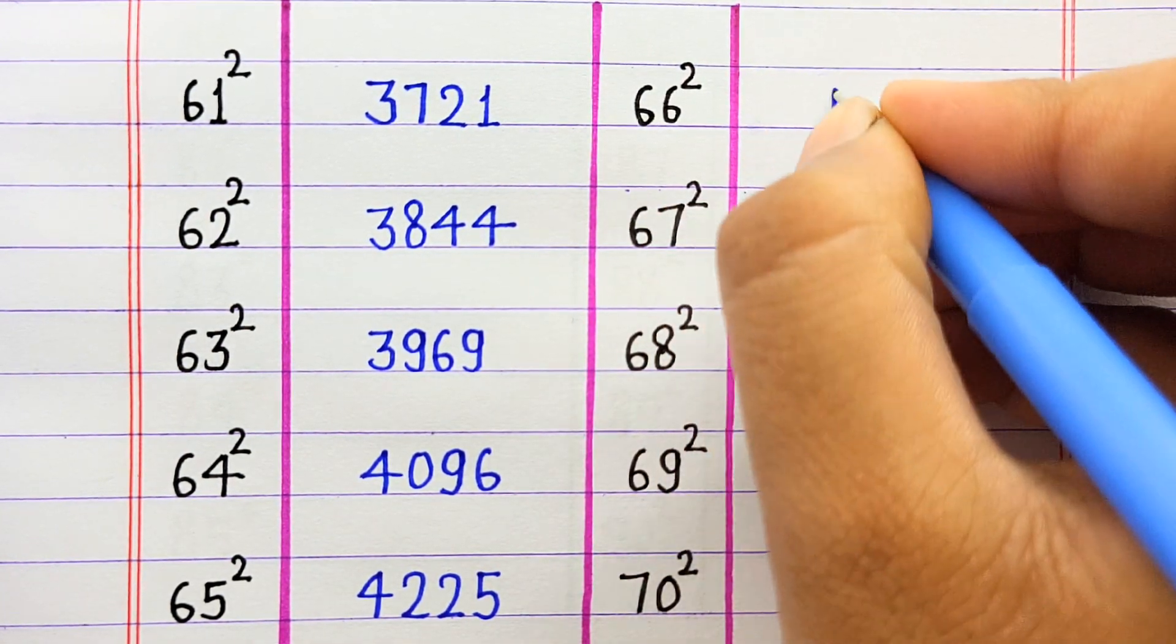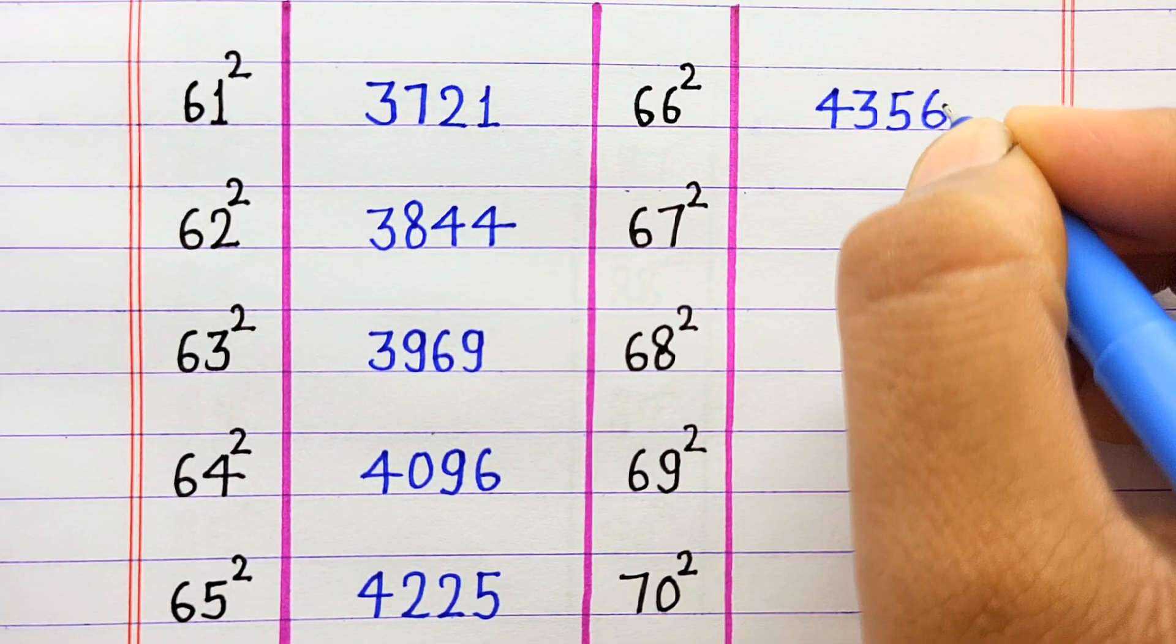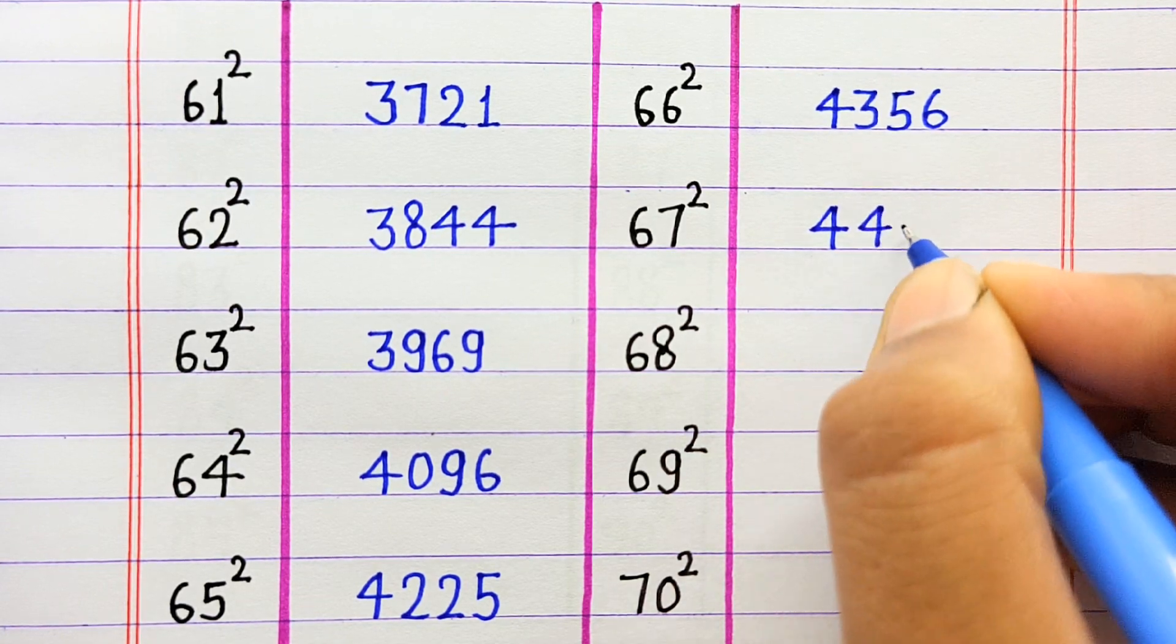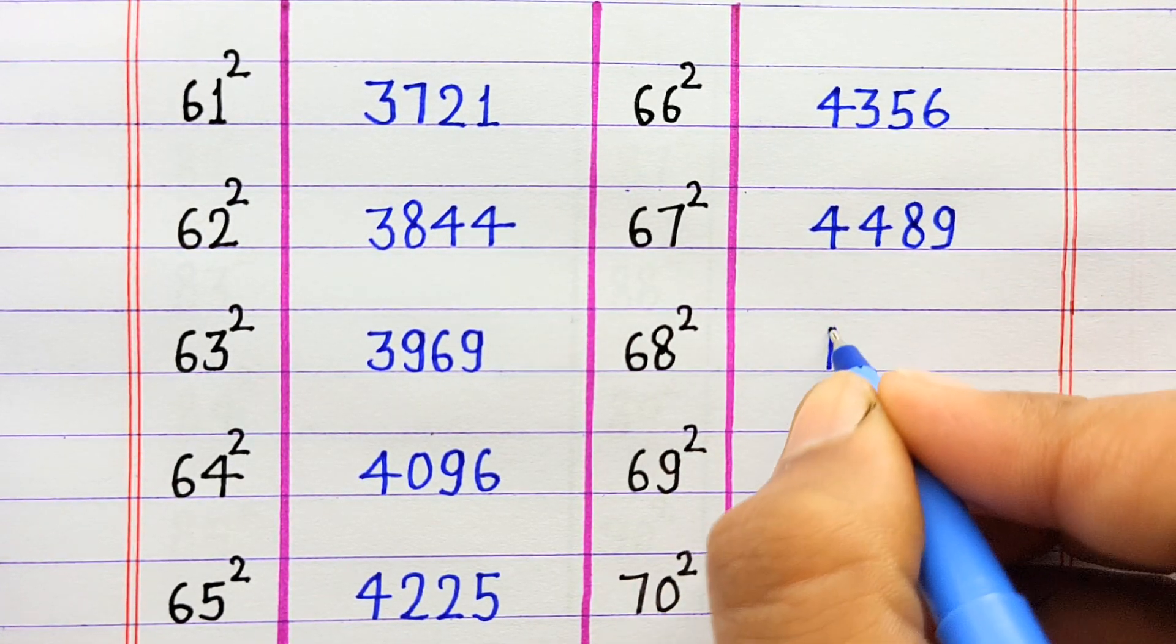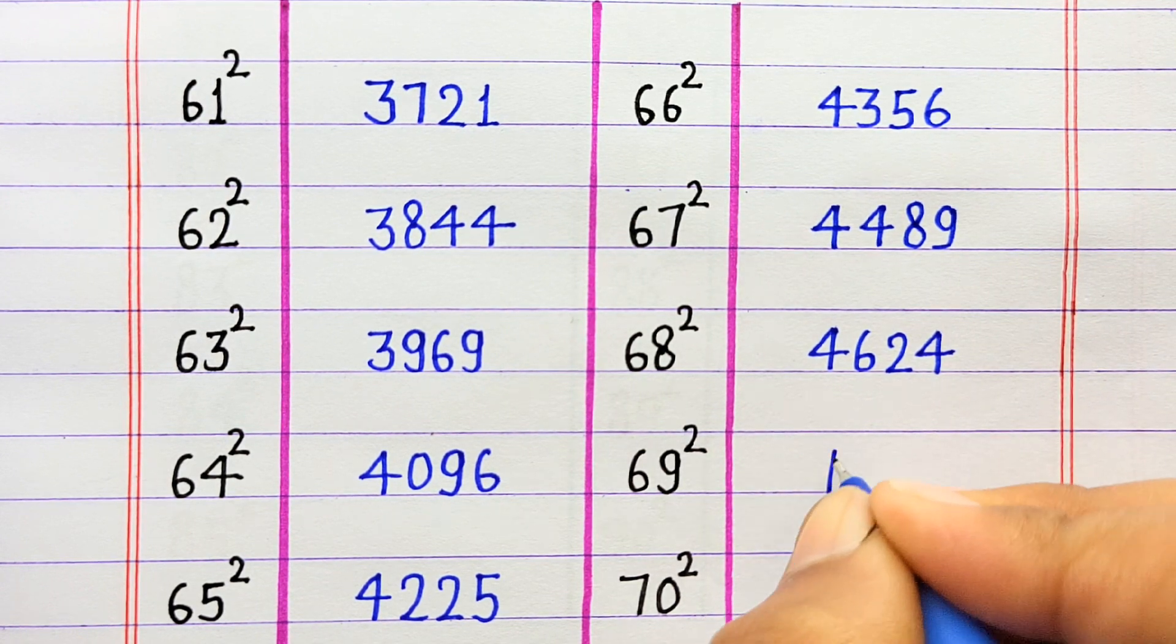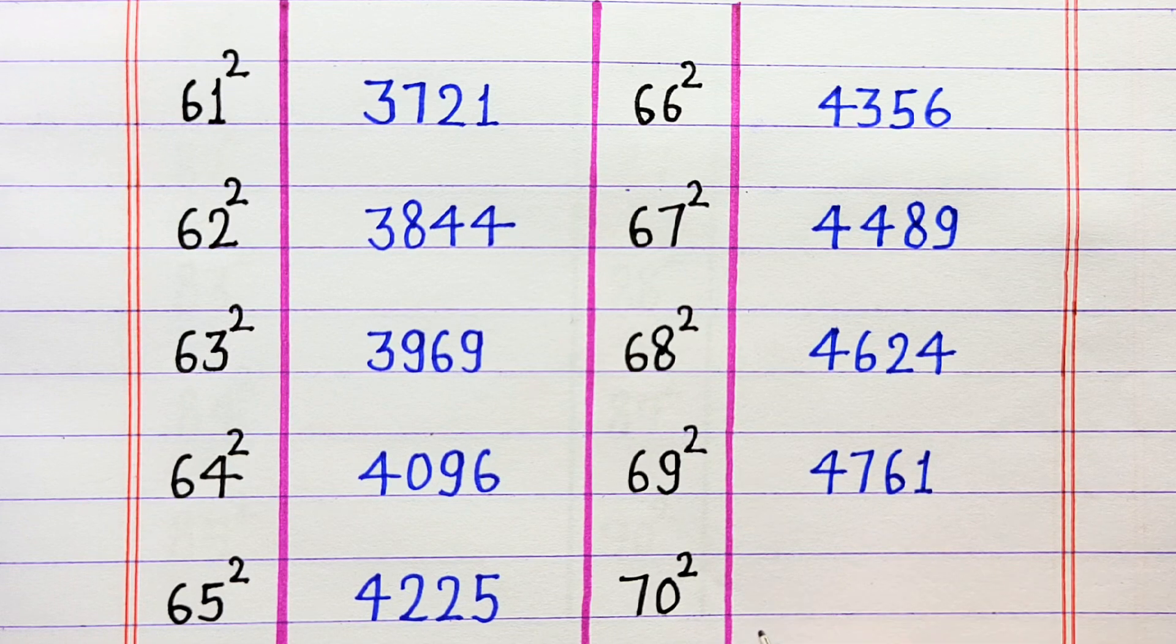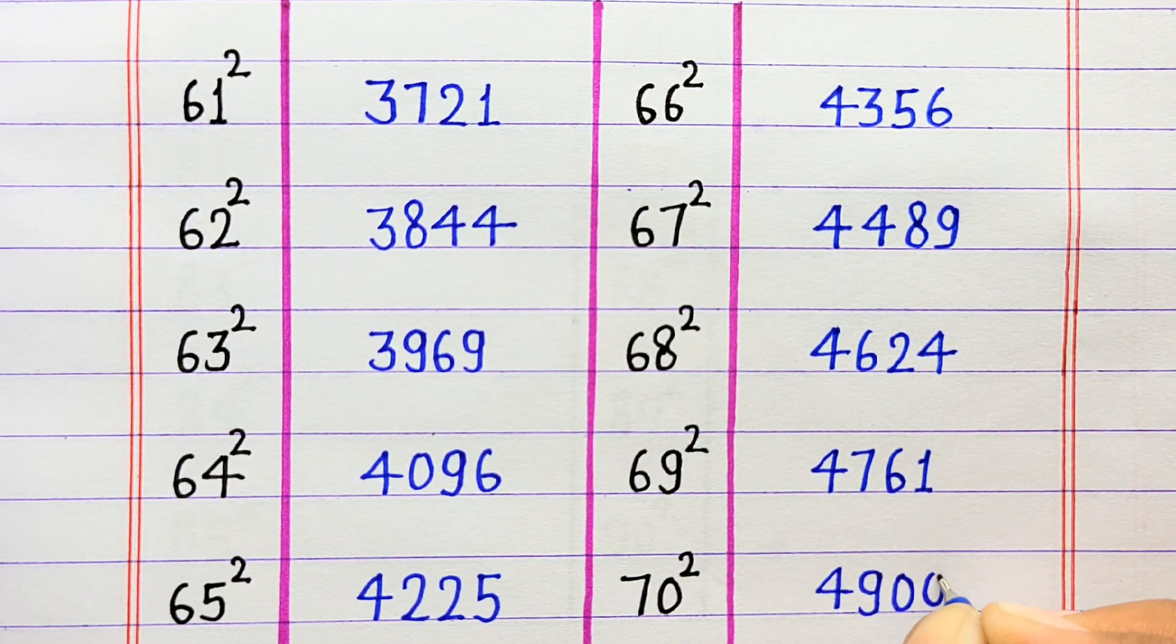66 ka square 4356, 67 ka square 4489, 68 ka square 4624, 69 ka square 4761, 70 ka square 4900.